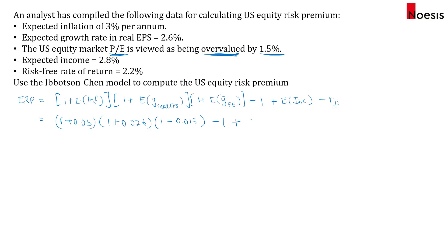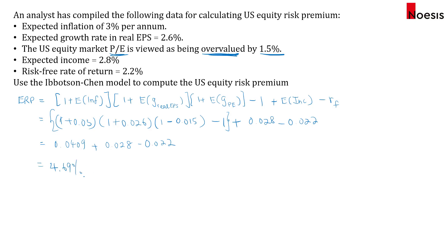We then add in the expected income of 2.8% minus the risk-free rate of 2.2%. The growth component calculates to 0.0409, and adding the income and subtracting the risk-free rate gives us 4.69%. This is the equity risk premium for the US market based on the Ibbotson-Chen model.